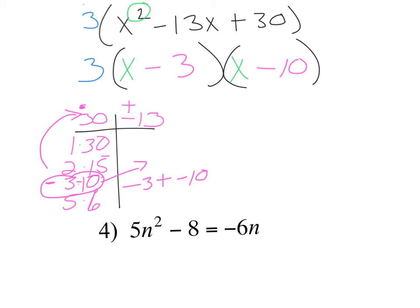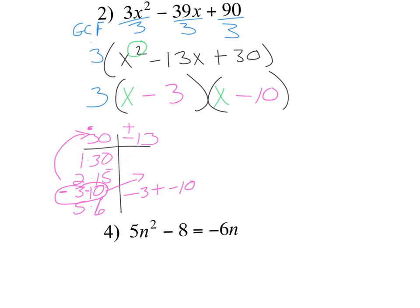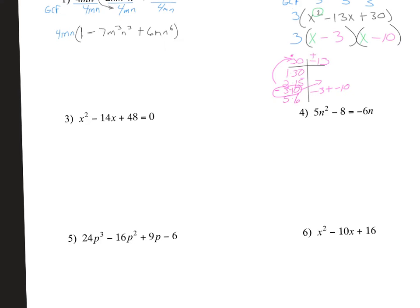The tricky part on the Google Form is that the directions say, for expressions with two binomials, type the one with the smaller constant first. Numbers three and four you're going to solve — both of them. What's your clue that you know you'll have to solve? The equal sign. They've got an equal sign.